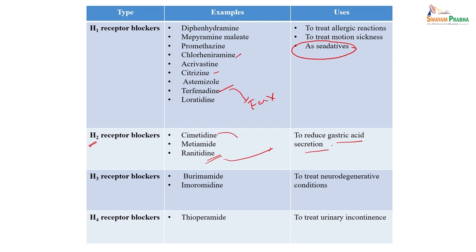Taking the example of H3 blockers — therapeutically there is not much use, like burimamide and metiamide. These drugs are preferred to be used experimentally in neurodegenerative conditions, since H3 receptors are mostly located in the CNS as autoreceptors. H4 and H5 receptors are also in the CNS. One drug called thioperamide is used for urinary incontinence.